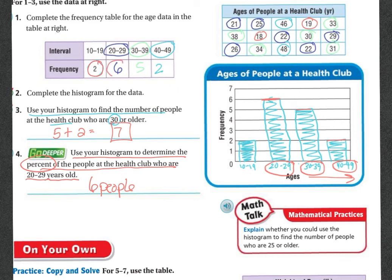Well, total there was 2 plus 6, which is 8, plus 5 is 13, plus 2, which is 15. So that means they interviewed 15 people total. So if I take 6 people and I divide it by the total 15, then I'm going to get the percent.